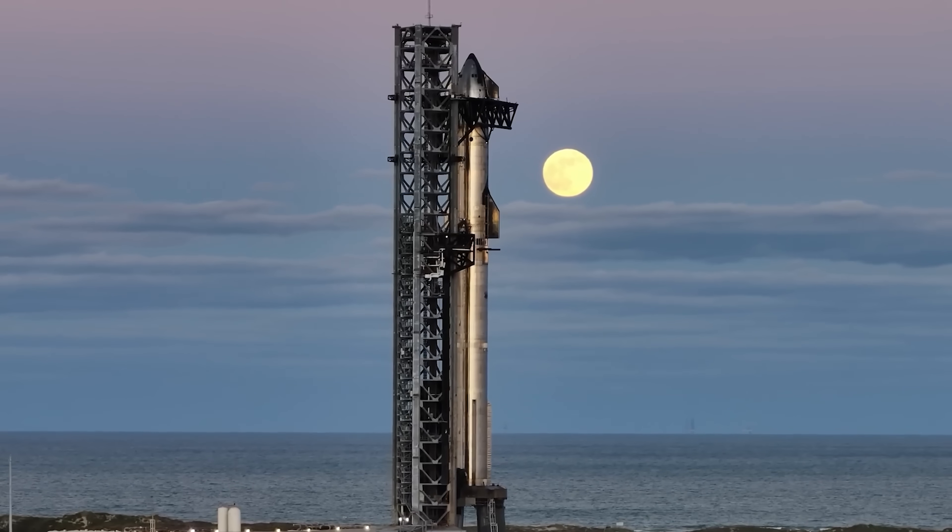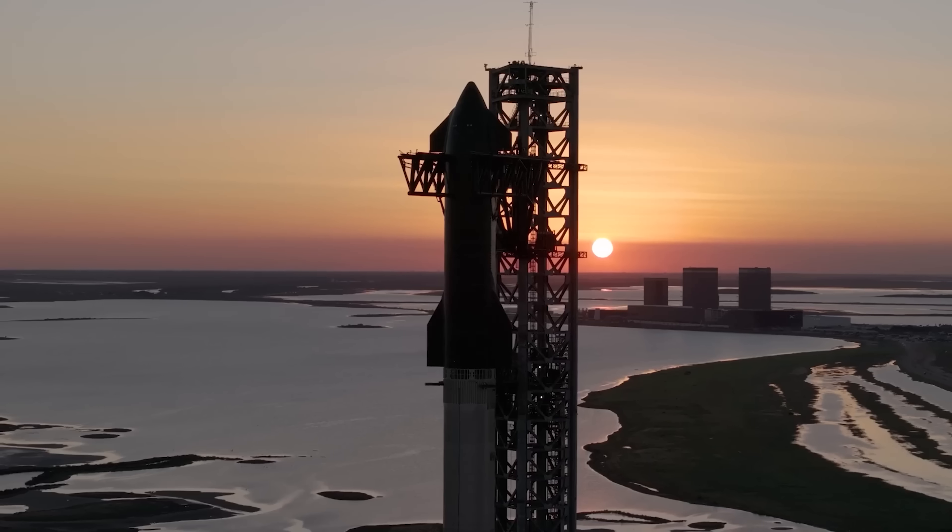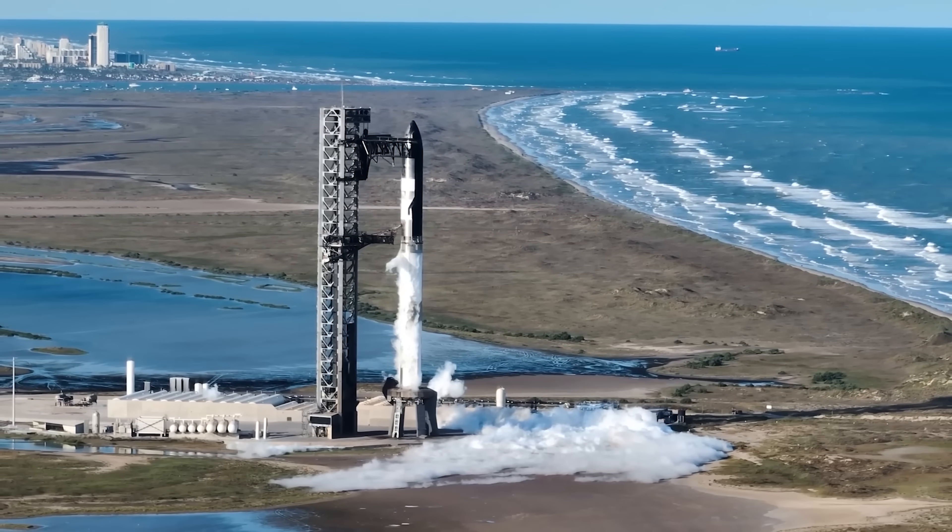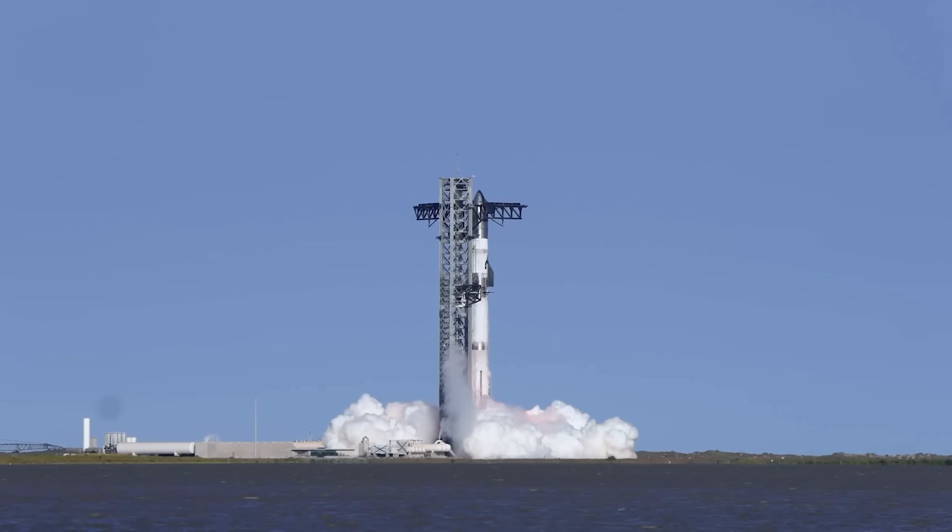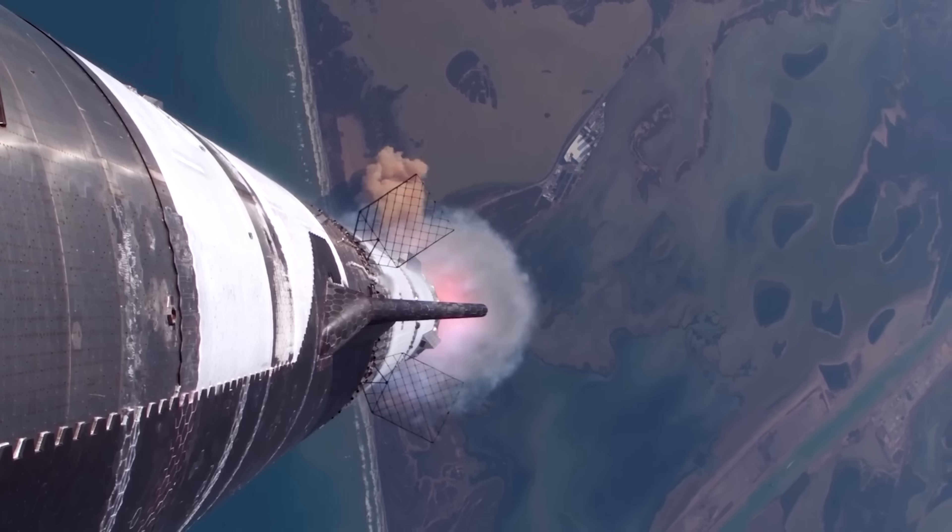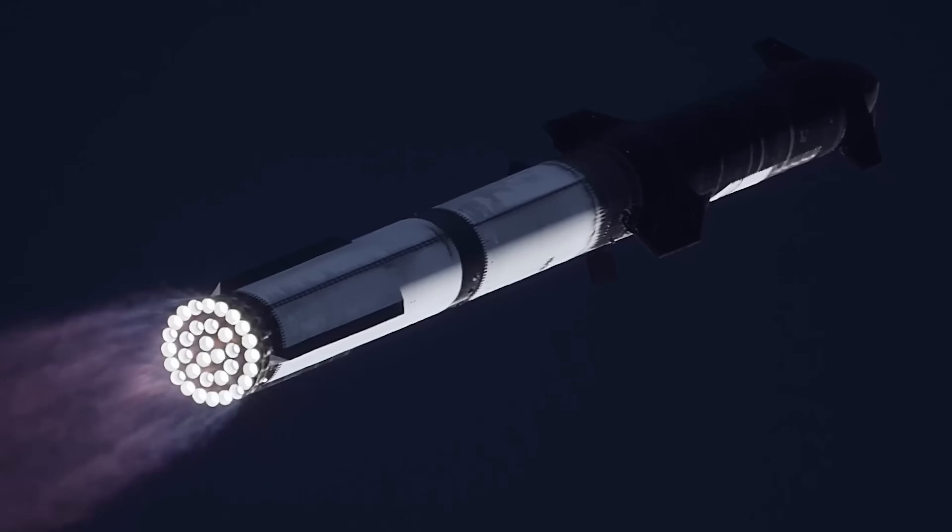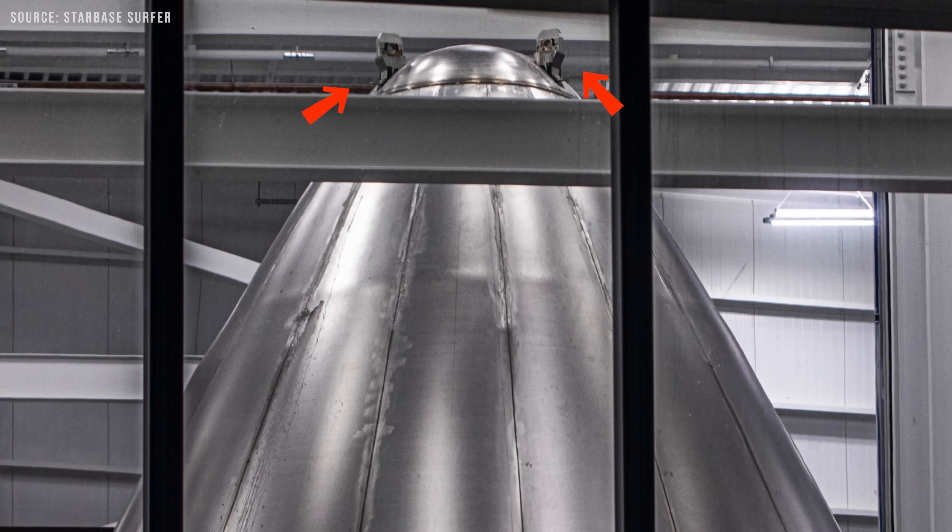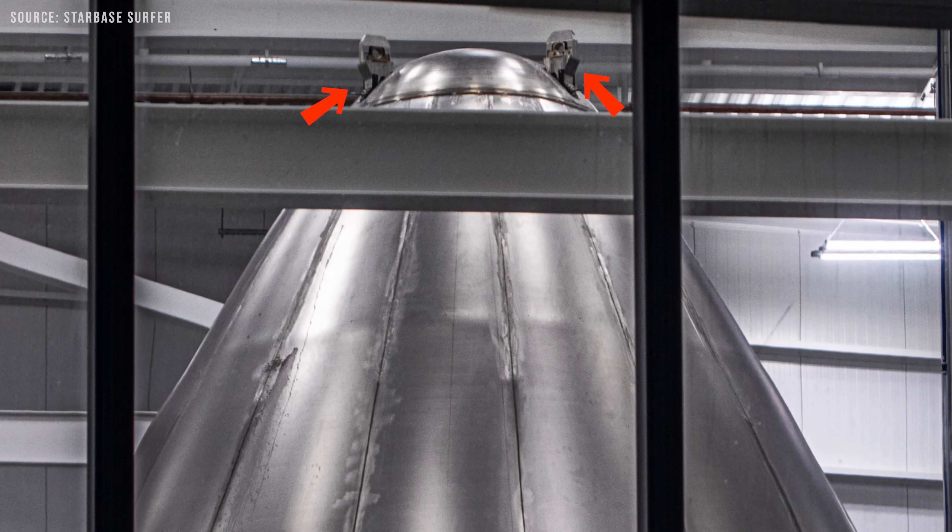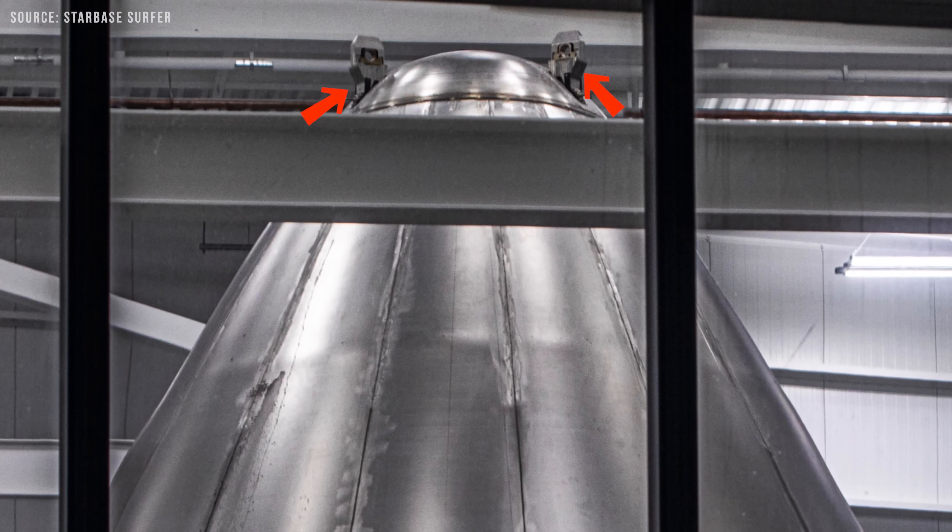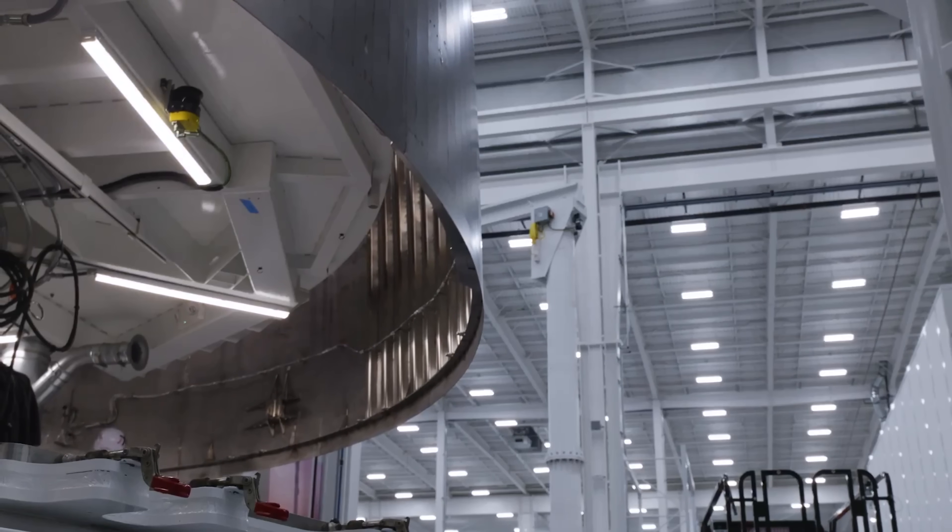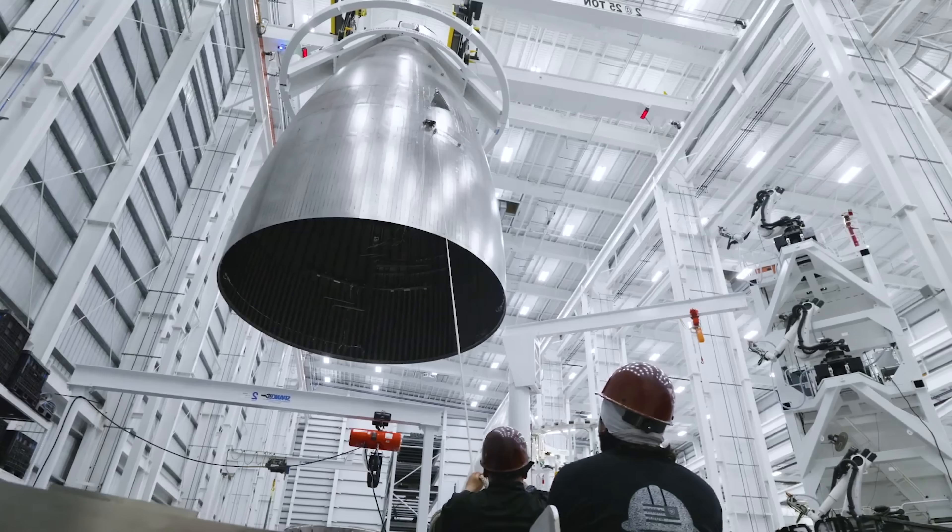As I mentioned earlier, the Starship nosecone is built to be extremely strong, and unlike a traditional fairing, it isn't jettisoned during flight. That makes it highly efficient in terms of structural reinforcement, helping to reduce both dry mass and interference with the payload volume. At the very top of the nosecone, you'll notice those small ear-like protrusions. These are actually three tiny hooks, located right at the tip, used exclusively for lifting during assembly and initial stacking.